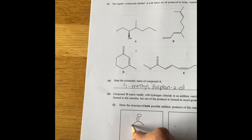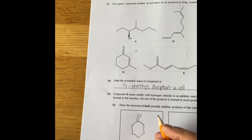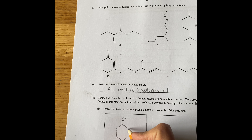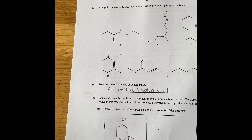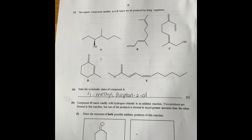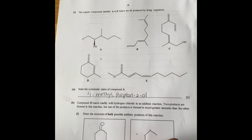Just draw it like that — the double bond disappears. H goes there and Cl goes there. You already have one methyl, so Cl goes on that carbon. That's the major product. For the minor product, you just flip it: the H goes to the top carbon and the Cl goes to the bottom carbon. Draw exactly the same structure.